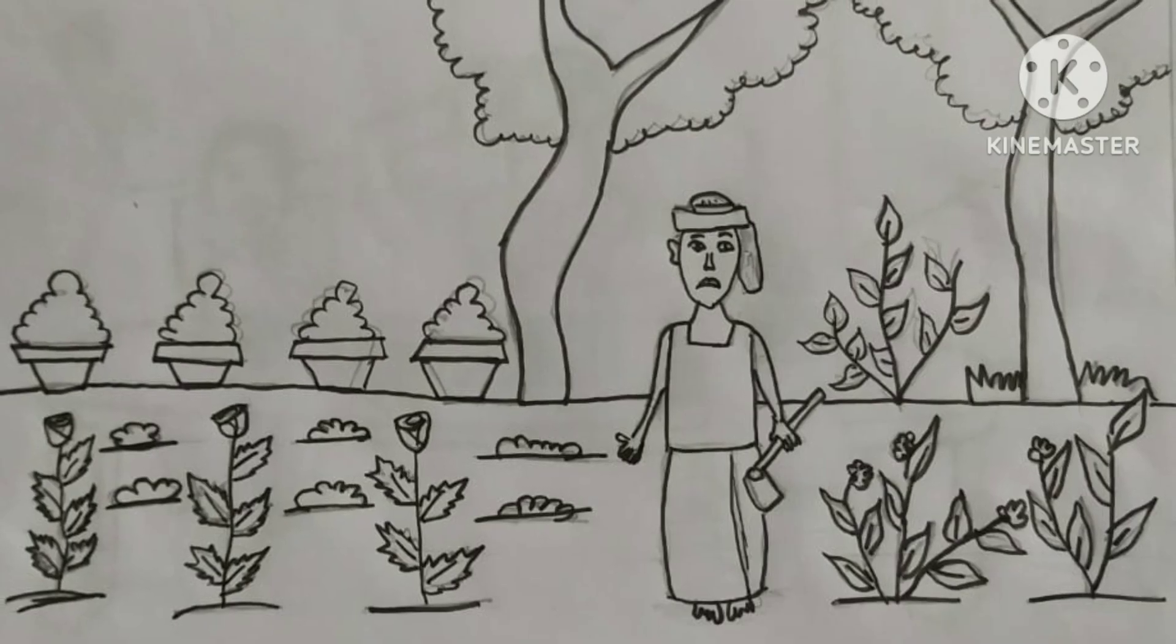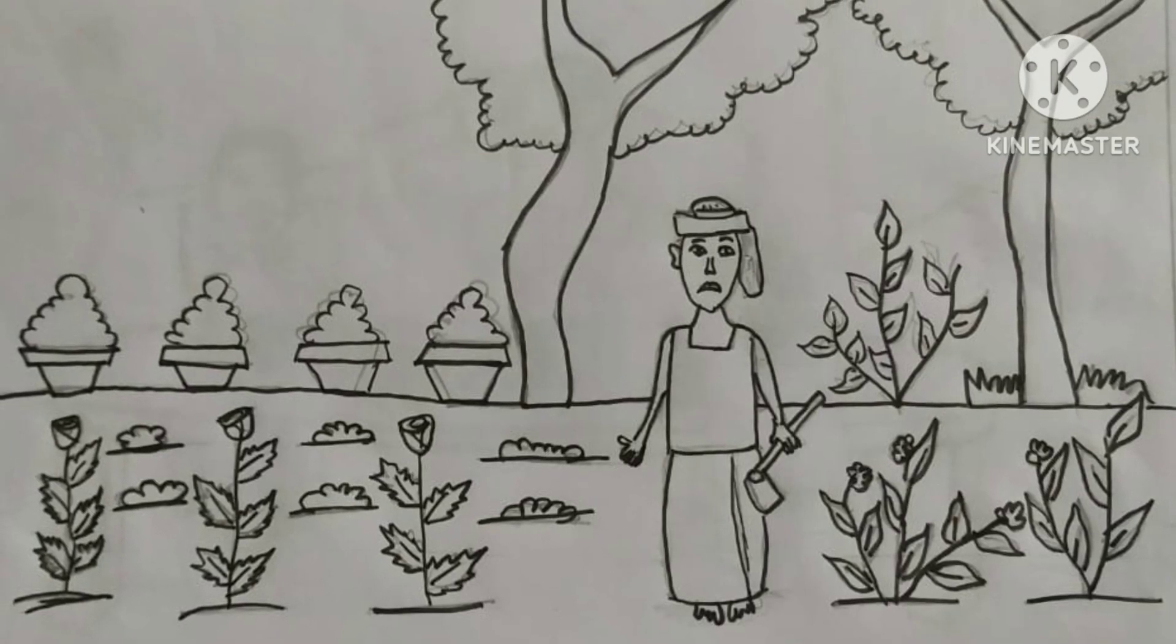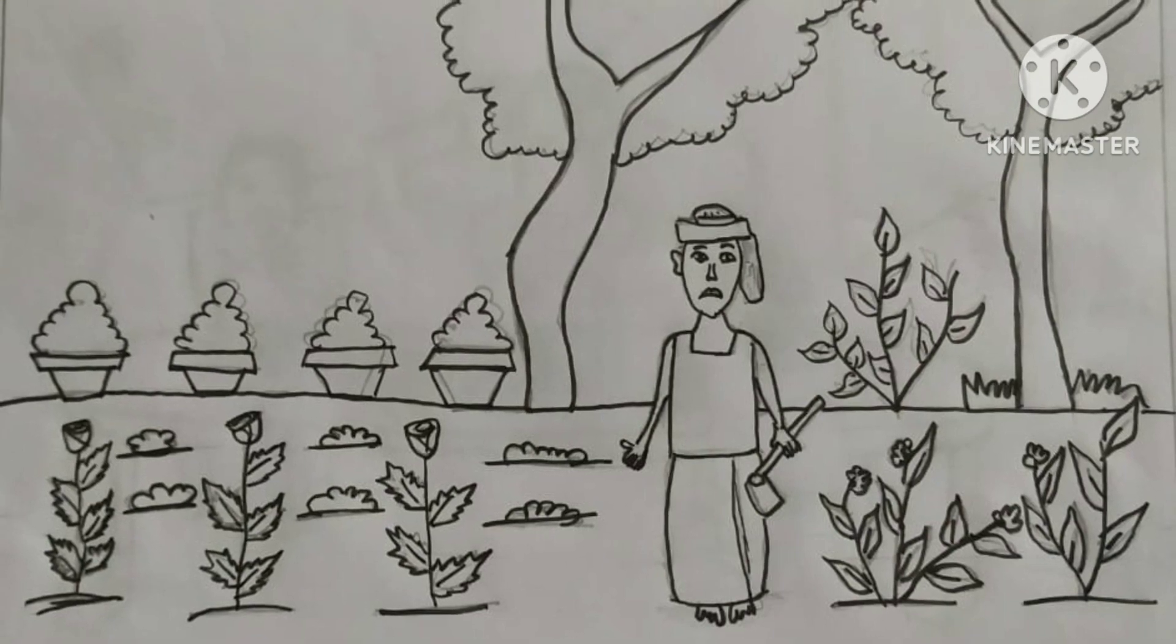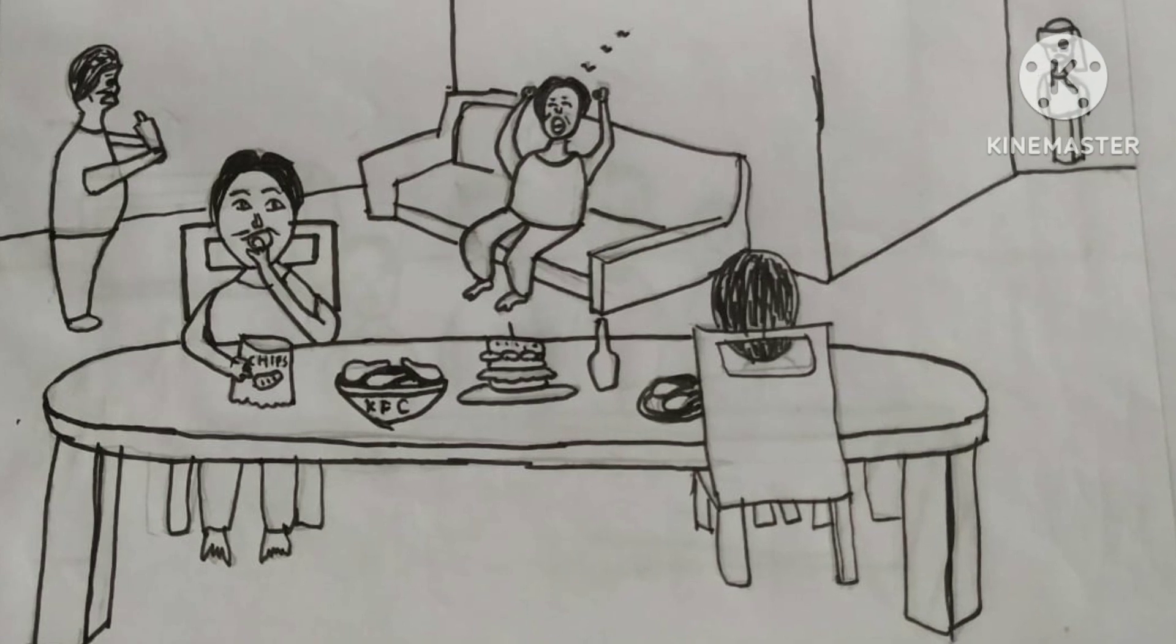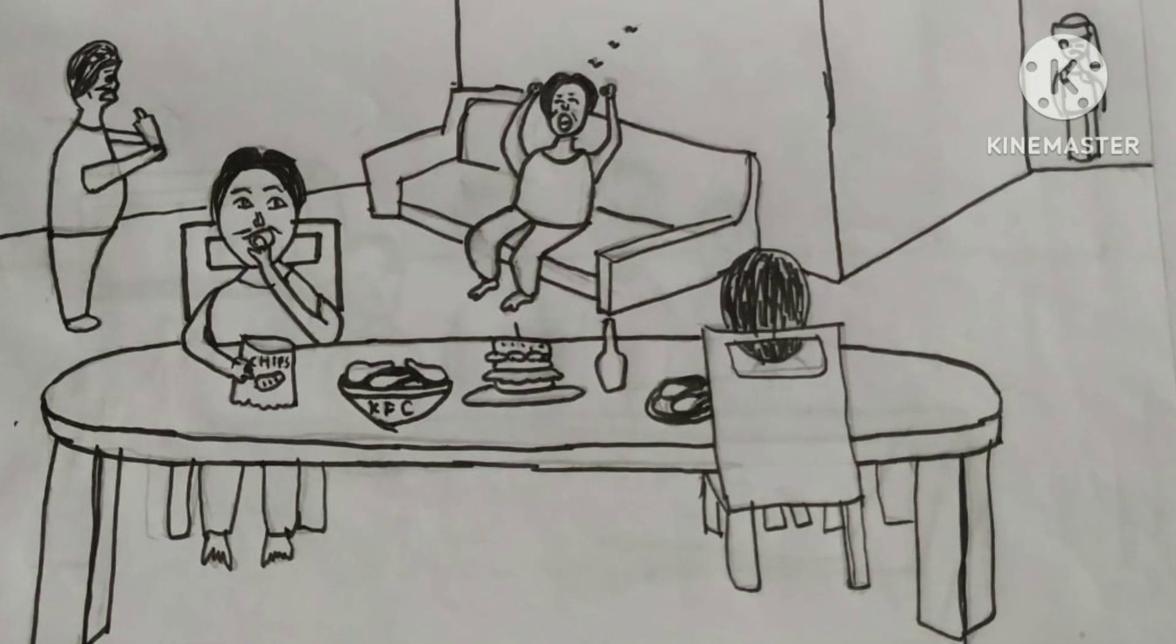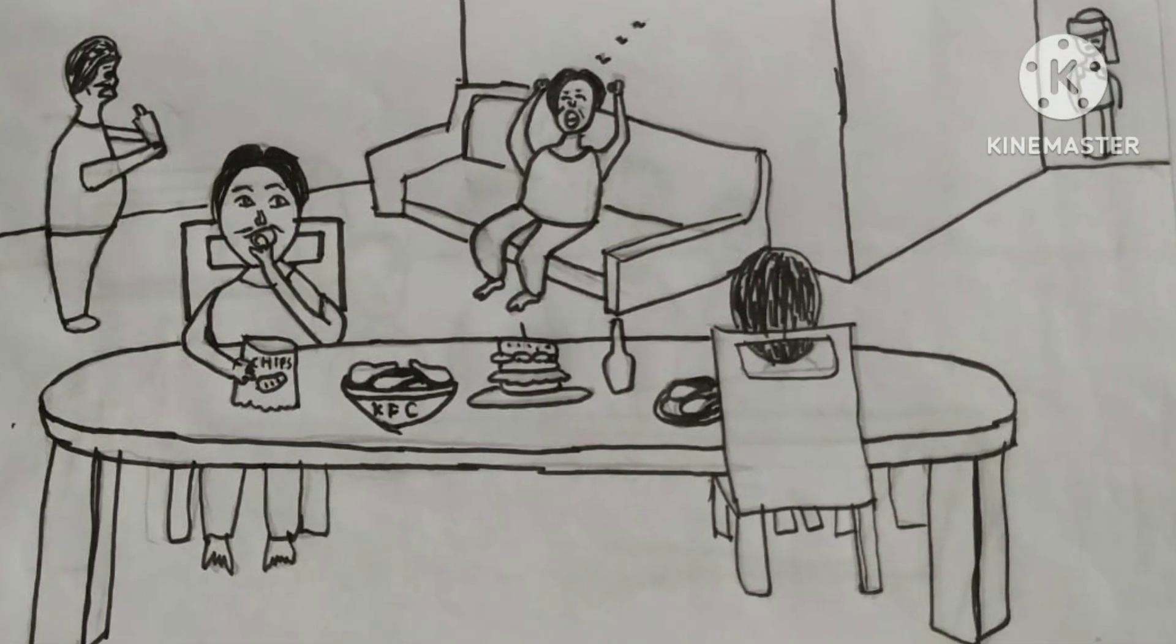Once upon a time there lived a farmer who worked hard. He has four boys, but they are very lazy. They don't come to help their father. They just eat and sleep everyday.